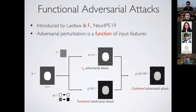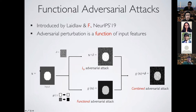There are other non-LP threat models — for example, functional adversarial attacks, where the adversarial perturbation is a function of input features. In LP the perturbation is defined almost independently from the input, but here the perturbation is a function of the input. If you have red, white, or gray pixels, all white pixels change similarly, all gray pixels change similarly — there's a global constraint coupling them via the defined function. You can also combine threat models to have a stronger combined adversarial attack.